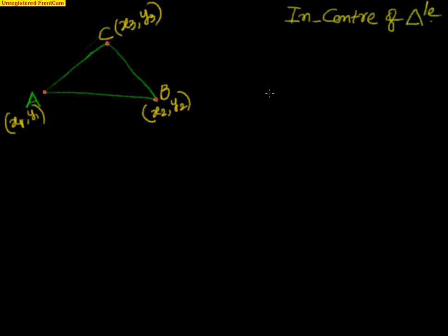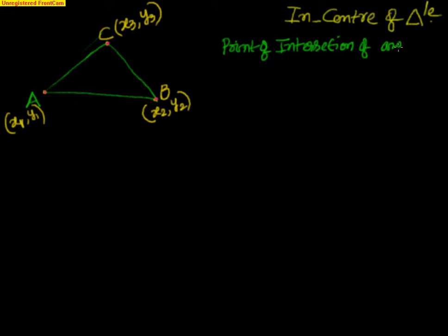We will also be using the angular bisector formula which we learned in previous classes. The incenter is nothing but the point of intersection of the angular bisectors of a triangle.